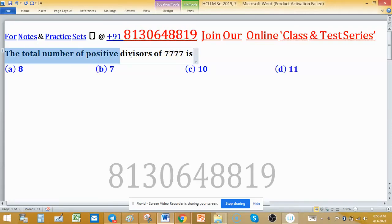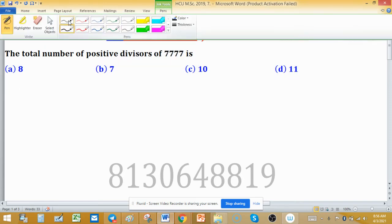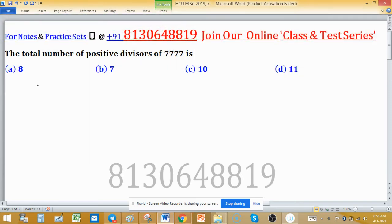The total number of positive divisors of 7777 is found using the function tau n. This gives you the total number of positive divisors.